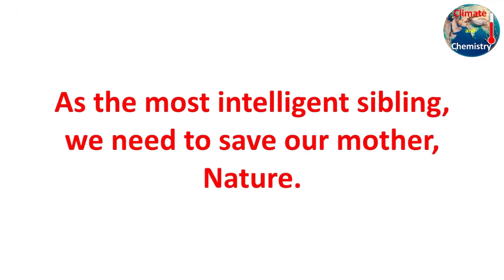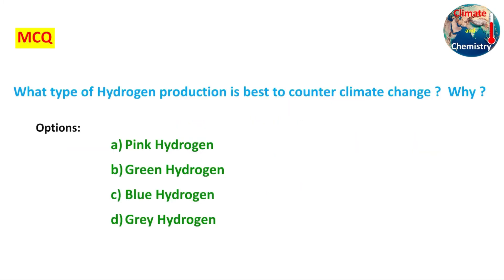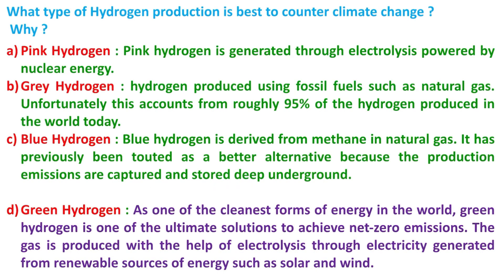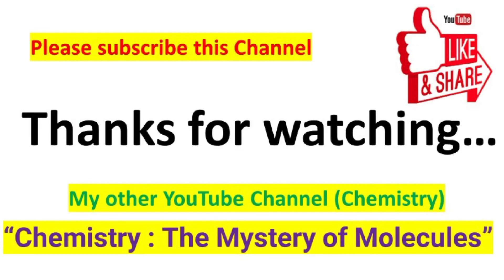As intelligent people, we need to save our planet. The answer to the MCQ — what type of hydrogen production is best to counter climate change — is green hydrogen. Green hydrogen achieves net-zero emission because it is produced by electrolysis of water using electricity from renewable sources. Thank you for watching.